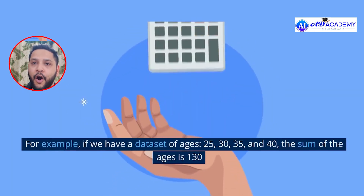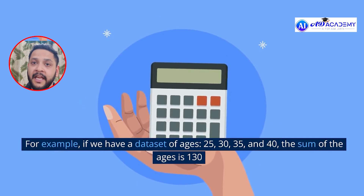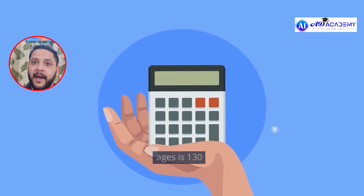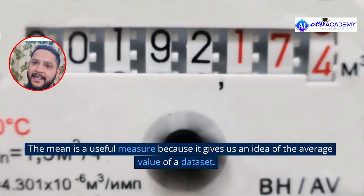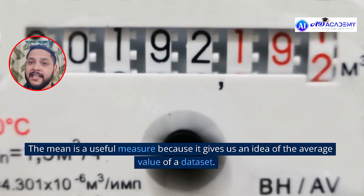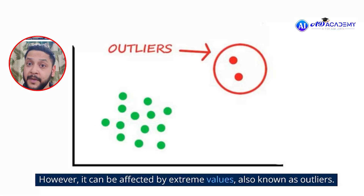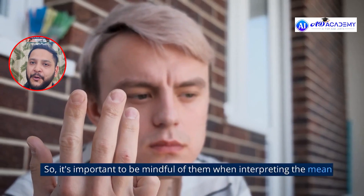Suppose we have a dataset of four data points: 25, 30, 35, and 40. Then the sum is 130, divided by the total number of data points which is 4, giving 32.5, which is the mean. Mean is actually the average of the dataset and is a useful measure, but it is always affected by outliers or extreme values, so be mindful while calculating the mean.